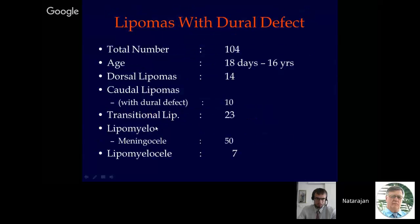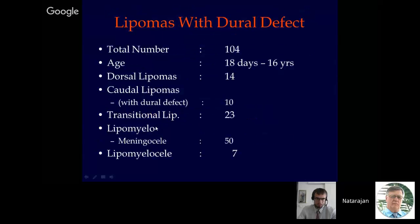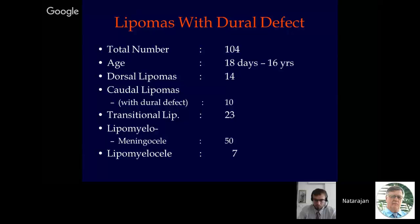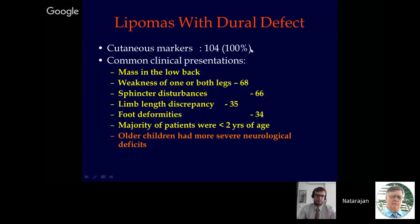Let's come to the next group — lipomas with dural defect — which is a much more common and much more complex entity. Here we had 104 patients, the most common being lipomyelomeningocele, followed by transitional lipomas, caudal lipomas, dorsal lipomas, and lipomyelocele. Clinically, all patients in this group will have some sort of cutaneous marker — present in 100%. Neurological deficits are fairly common. Asymptomatic patients are rare. The most common presentations are motor disturbances, sphincter disturbances, limb length discrepancies, and orthopedic anomalies such as foot deformities. Because these patients have cutaneous markers like subcutaneous masses, they come to neurological attention much earlier, but whenever presentation was delayed, older children had more severe neurological deficits.